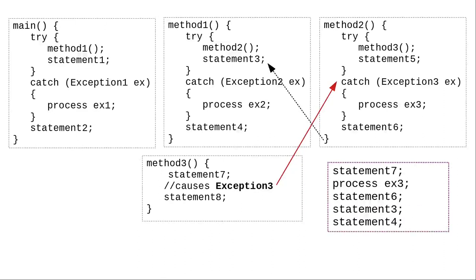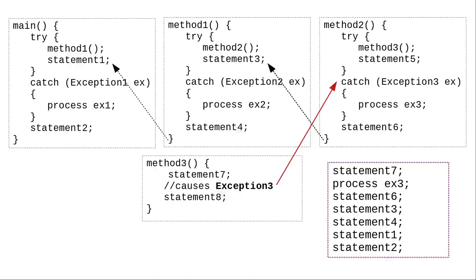Method 2 ends normally, and control returns to its caller, method 1. It proceeds to do statement 3 and statement 4. There's no exception handling needed here. When method 1 ends normally, it returns control to main, which does statement 1 and statement 2.